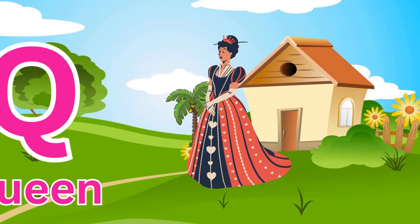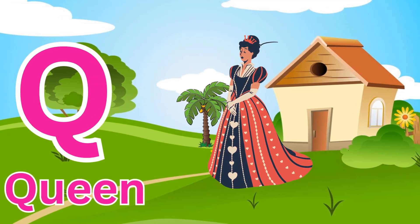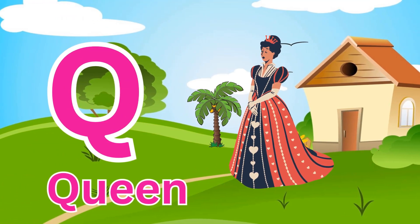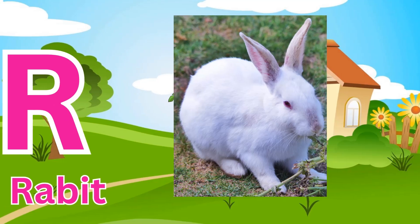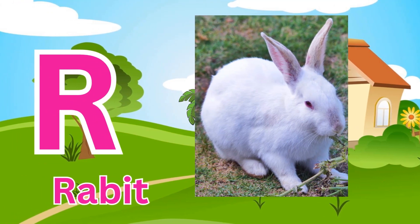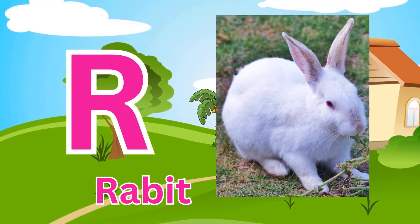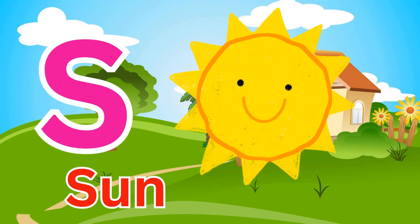Q is for Queen, Q-Q-Queen. R is for Rabbit, R-R-Rabbit. S is for Sun, S-S-Sun.